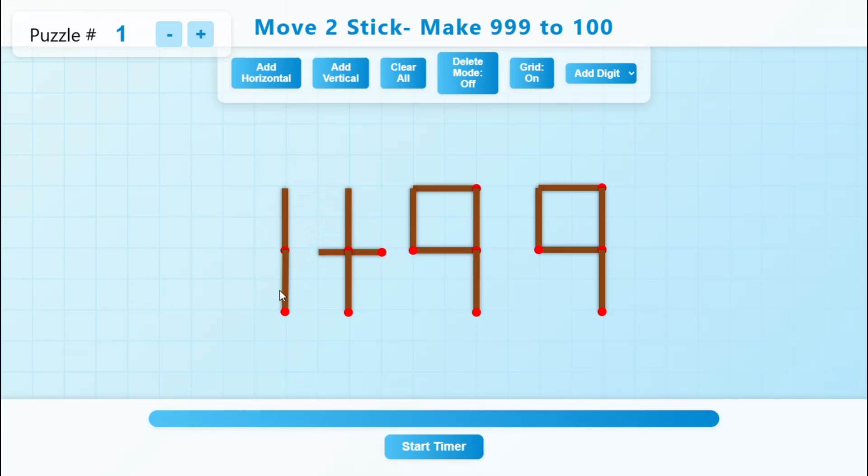So if you see this becomes 1 plus 99, which is equal to 100. So that solves the puzzle.